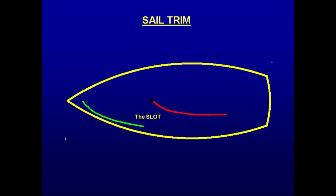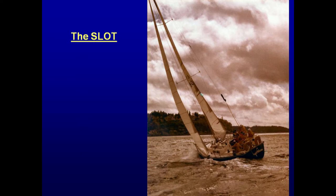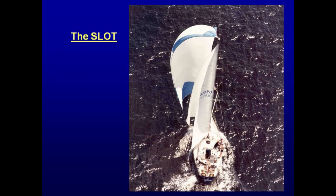The mainsail and jib need to work together to be effective. There is a slot between the two sails, and this should not be obstructed. It is normal to sheet the main about 10 degrees tighter than the jib. Looking at the boat in this photo, you'll see that the slot is not obstructed at all. In this photo, a staysail is used with a spinnaker to create two slots.